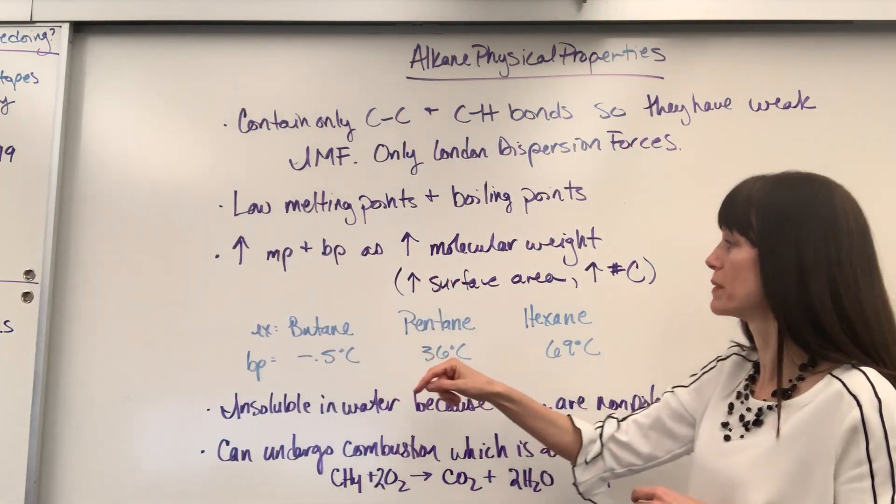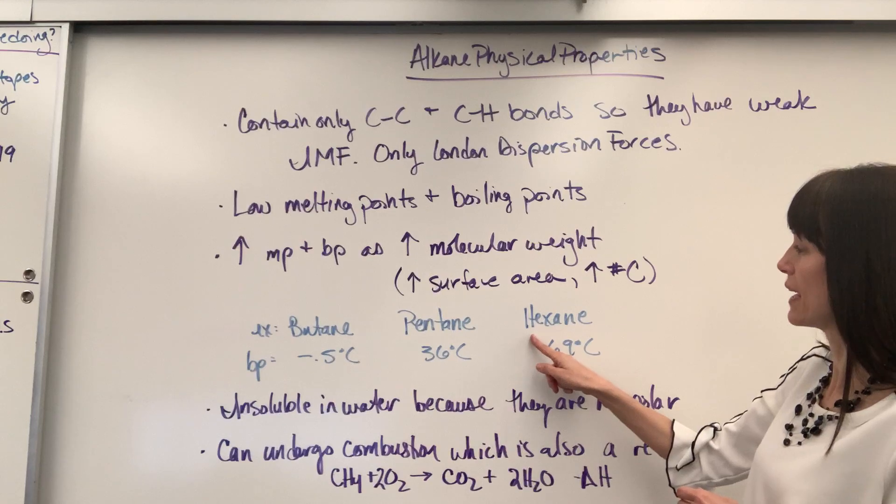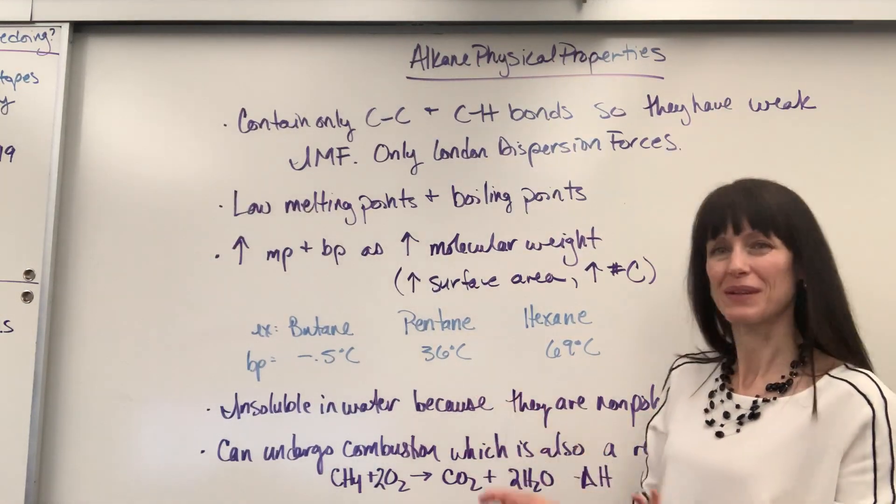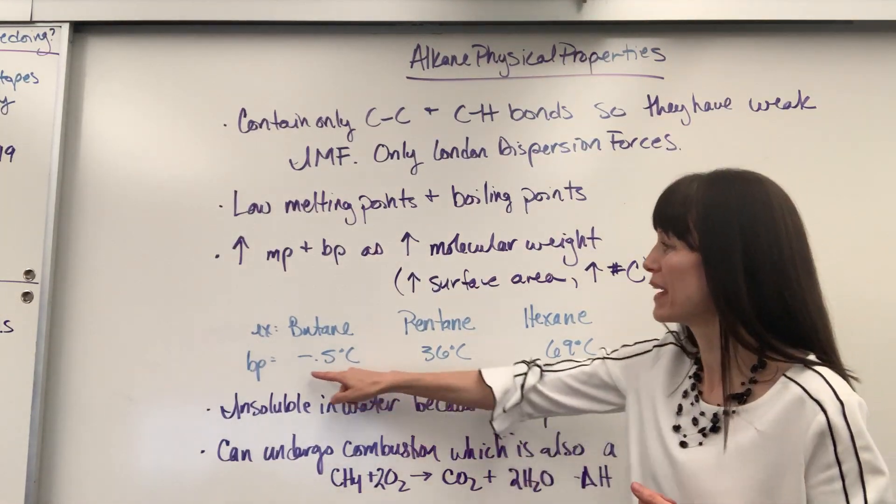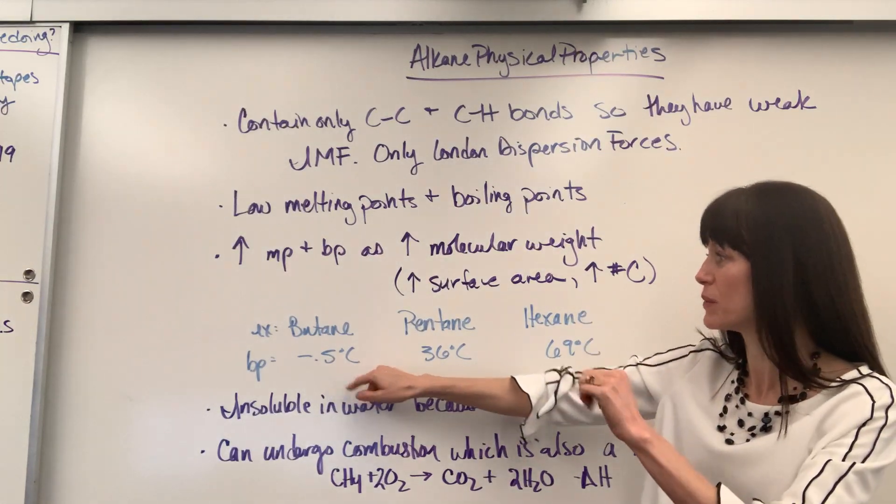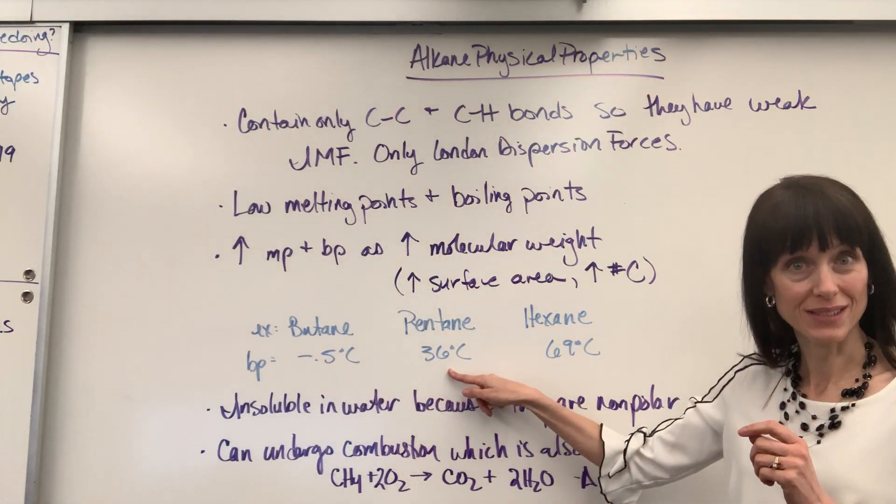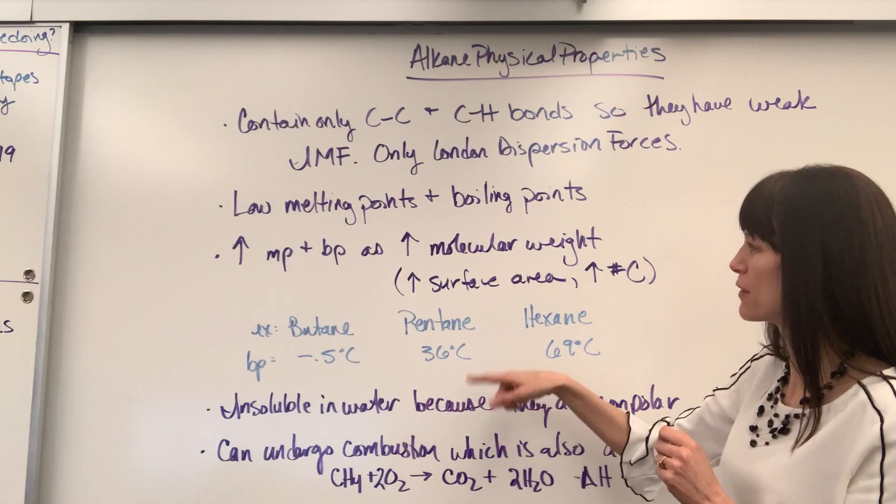We've got butane with four carbons, pentane with five, hexane has six carbons. And look at the boiling points. We go from negative 0.5 degrees C for four carbons butane, 36 degrees C for pentane, five carbons.